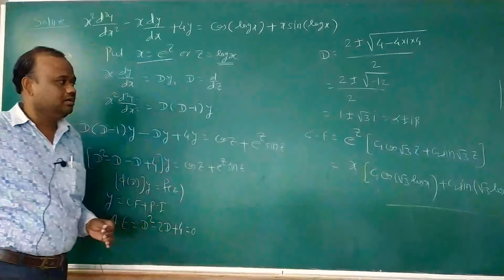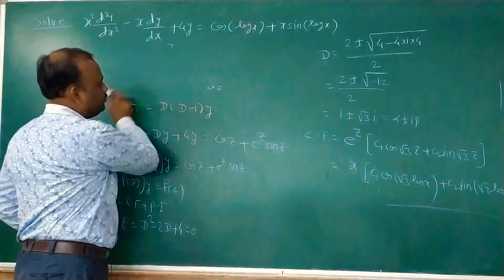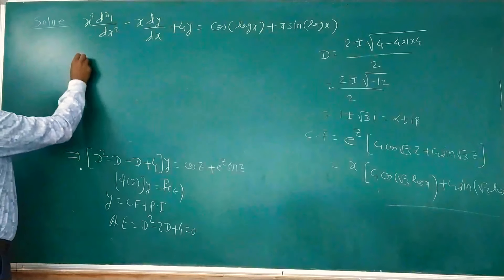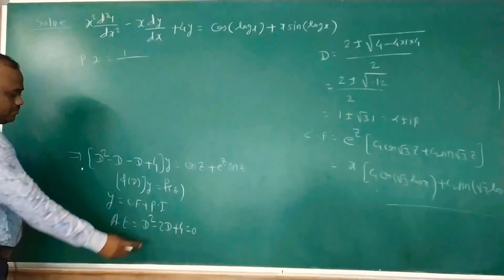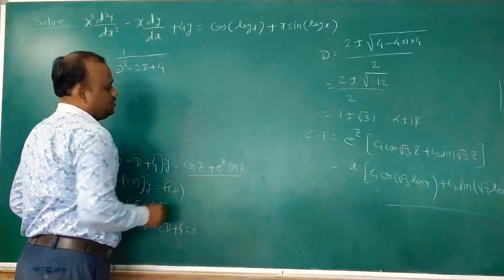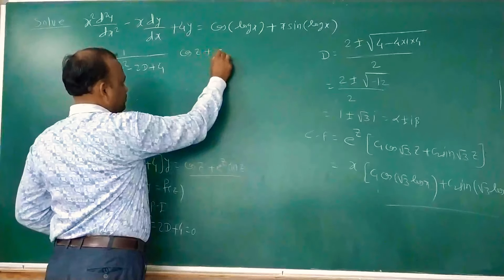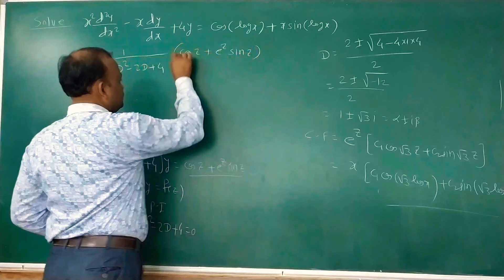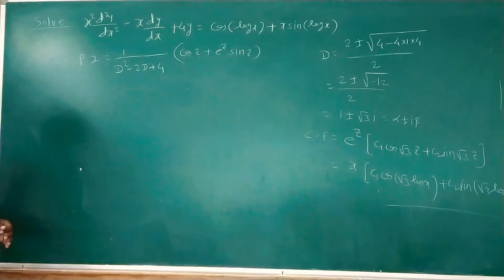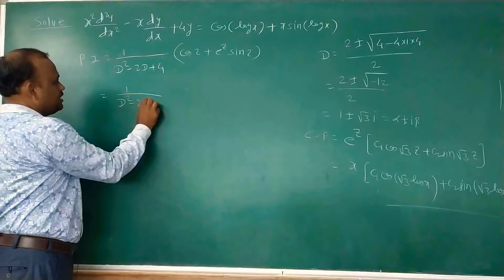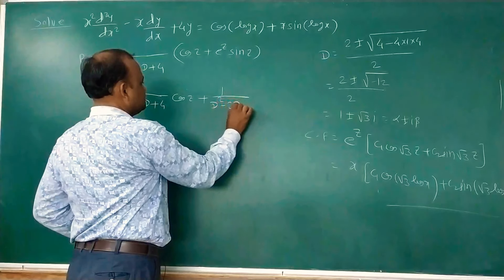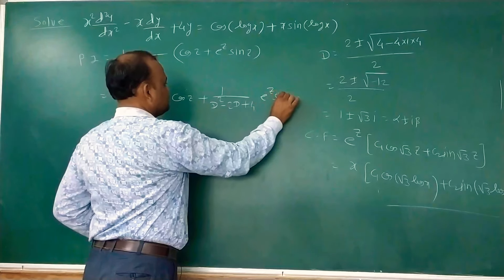Now we find the particular integral. PI = 1/φ(D)·f(z) = 1/(D² − 2D + 4)·[cos z + e^z·sin z]. We split this into two parts: PI₁ = 1/(D² − 2D + 4)·cos z and PI₂ = 1/(D² − 2D + 4)·e^z·sin z.